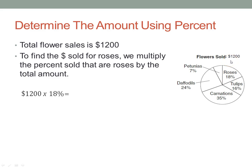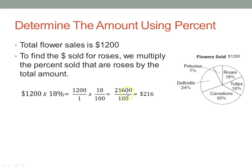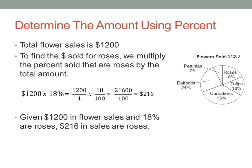We multiply 18% by $1,200. Let's put these into fractions — percent means per hundred, just like century means 100 years or a centipede has 100 legs. So: 1,200 over 1 times 18 over 100. Multiply across: 21,600 over 100. Cross-canceling the zeros gives us $216. So with $1,200 in flower sales and roses at 18%, the dollar amount for roses is $216.